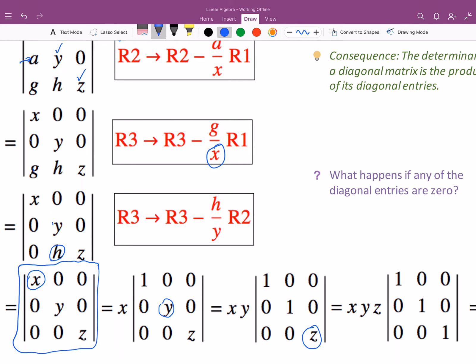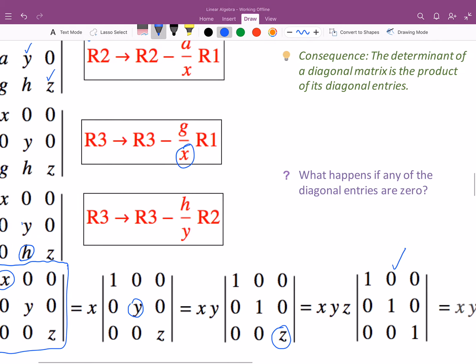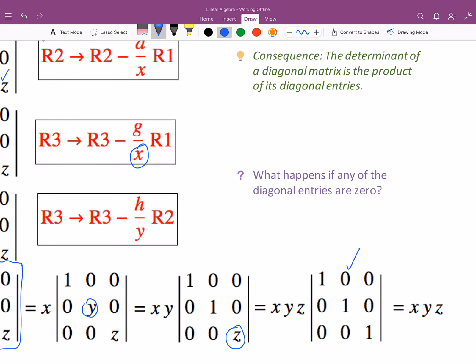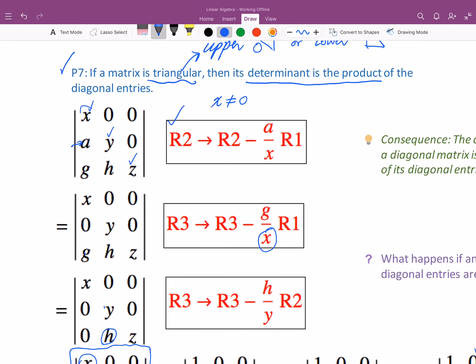And then in the third step we're going to factor out z from the third row, so now we have x y z. And look at this matrix we got. This is the identity matrix, and the determinant of this matrix is one. So finally the answer is x y z times one, so it's x y z.